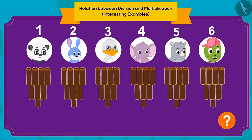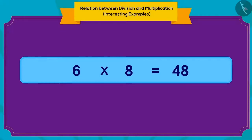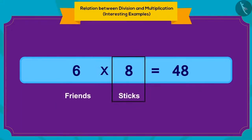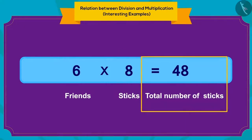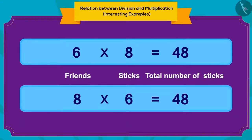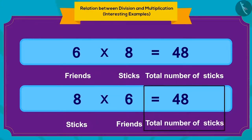How can we write this in the form of multiplication? We can write it in terms of multiplication like this. If there are six friends and each friend is given eight sticks, then the total number of sticks will be 48. Or, if each friend is given eight sticks and the number of friends is six, then the total number of sticks will be 48.